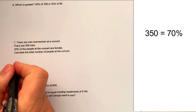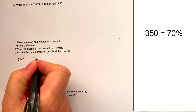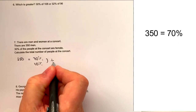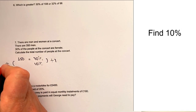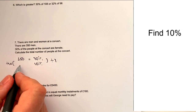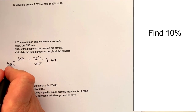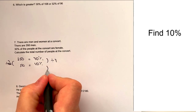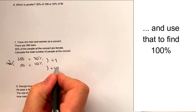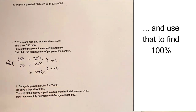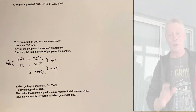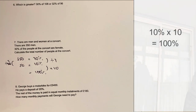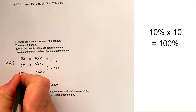That means we can write that as 350 equals 70%. If we divide by 7, it's going to give us 10%. So if we divide 350 by 7, I'm going to get 50. If I know that 50 is equal to 10%, then if I multiply that by 10, I'm going to get 100%, which is the question I'm looking to answer. So multiply 50 by 10, and that's going to give us 500 people.